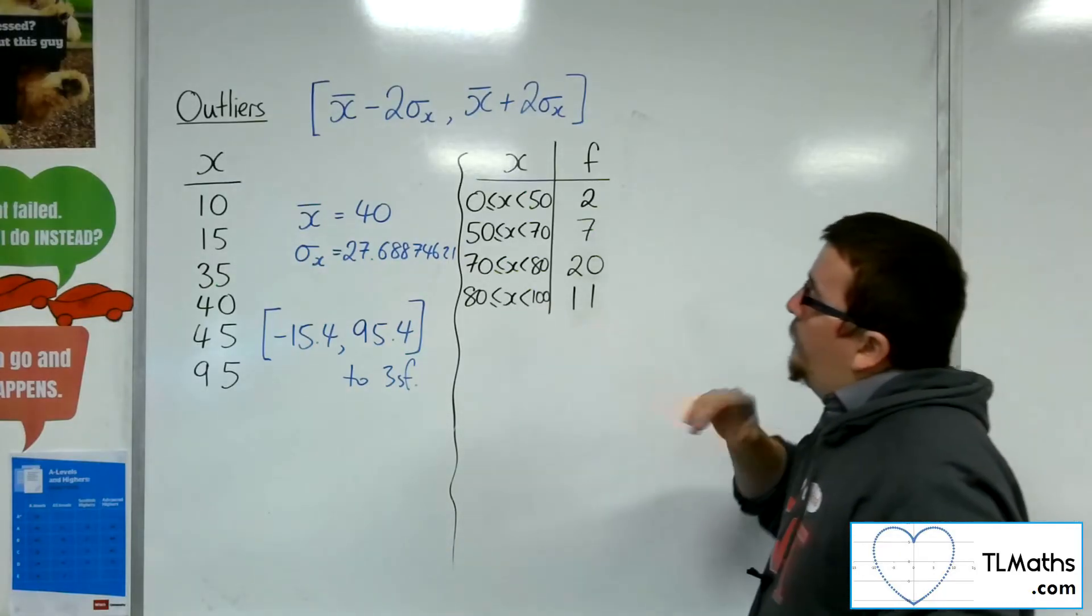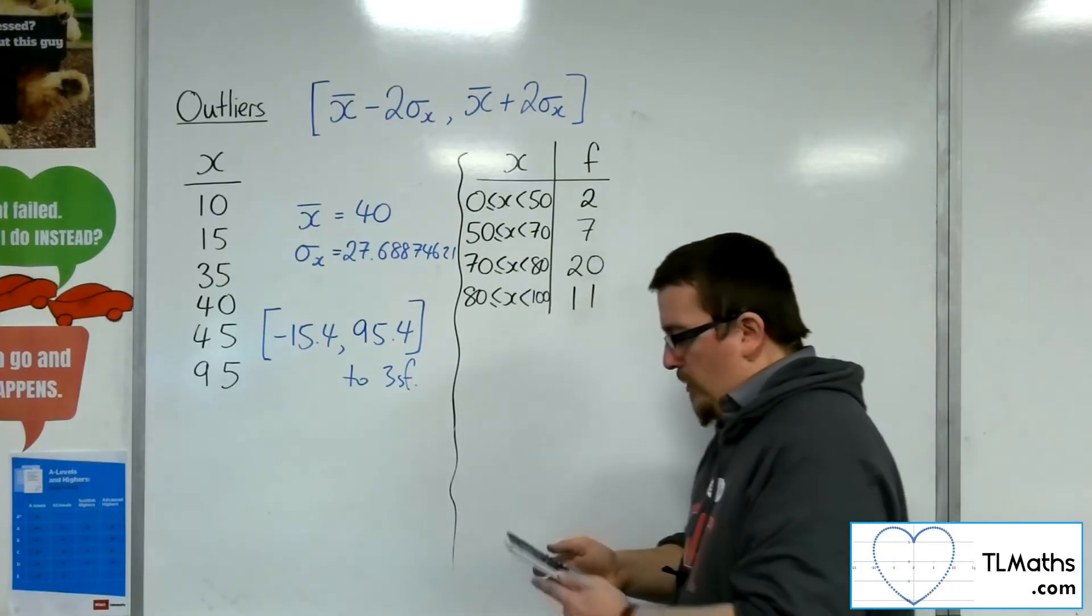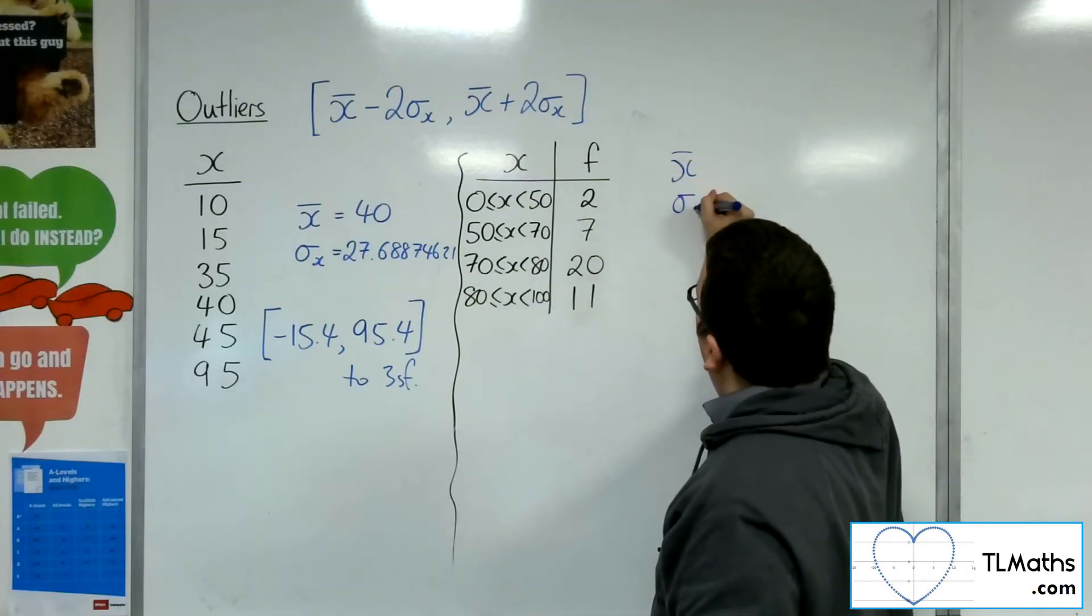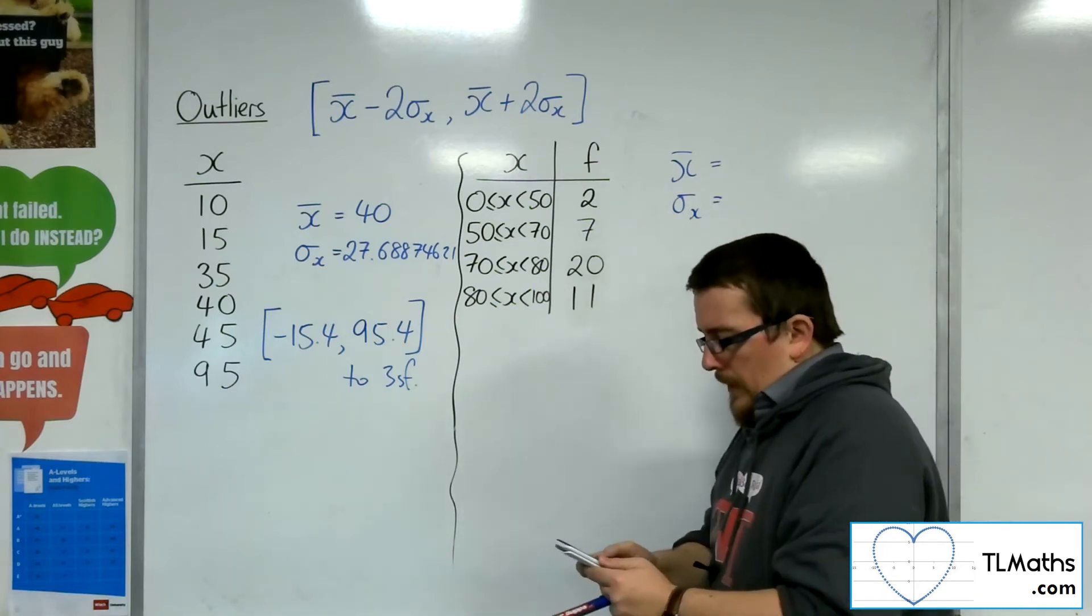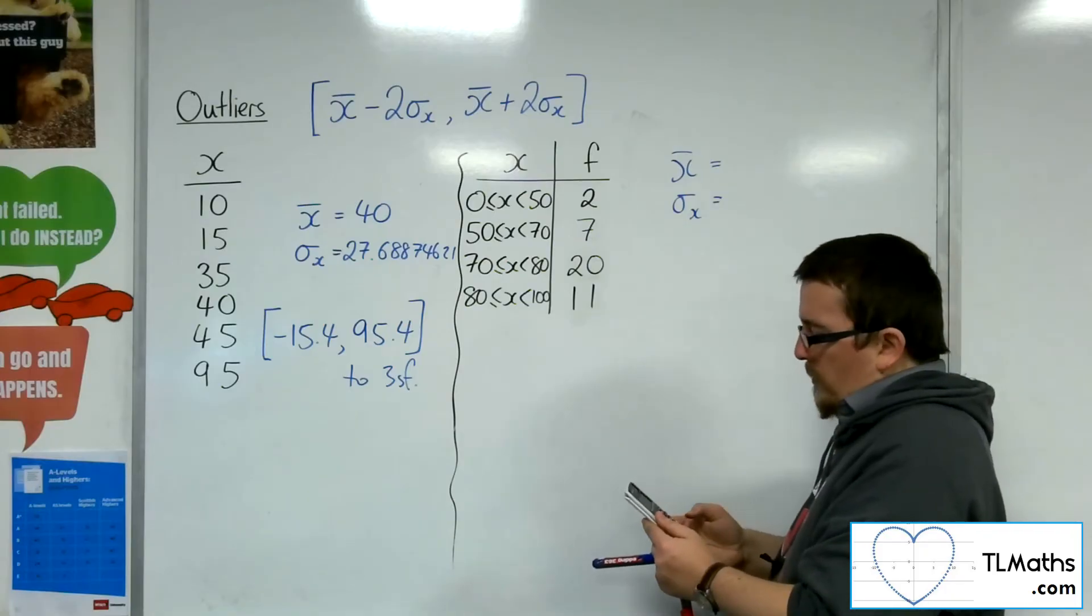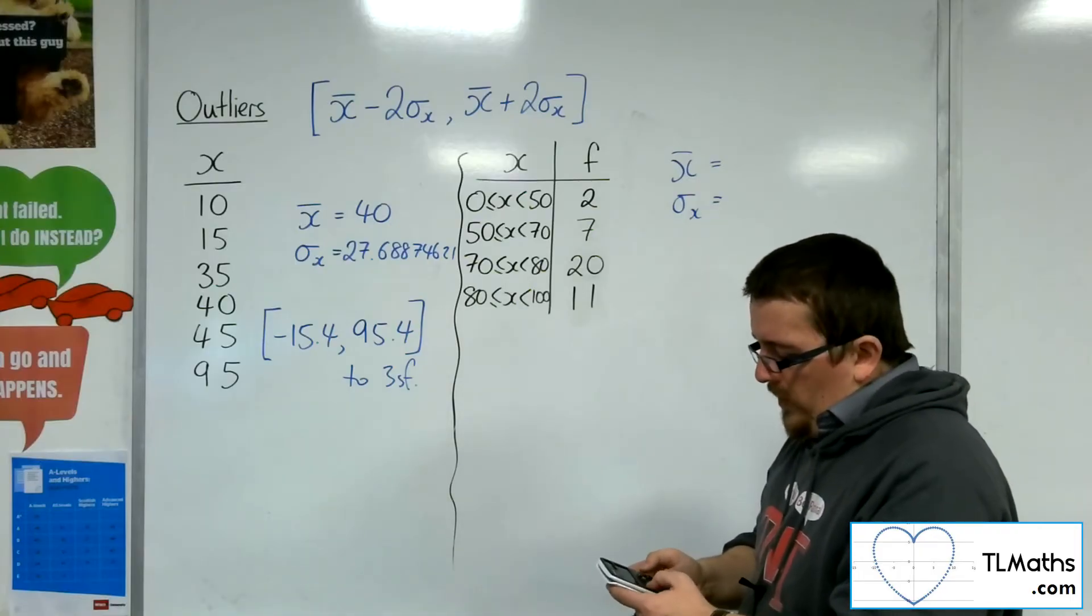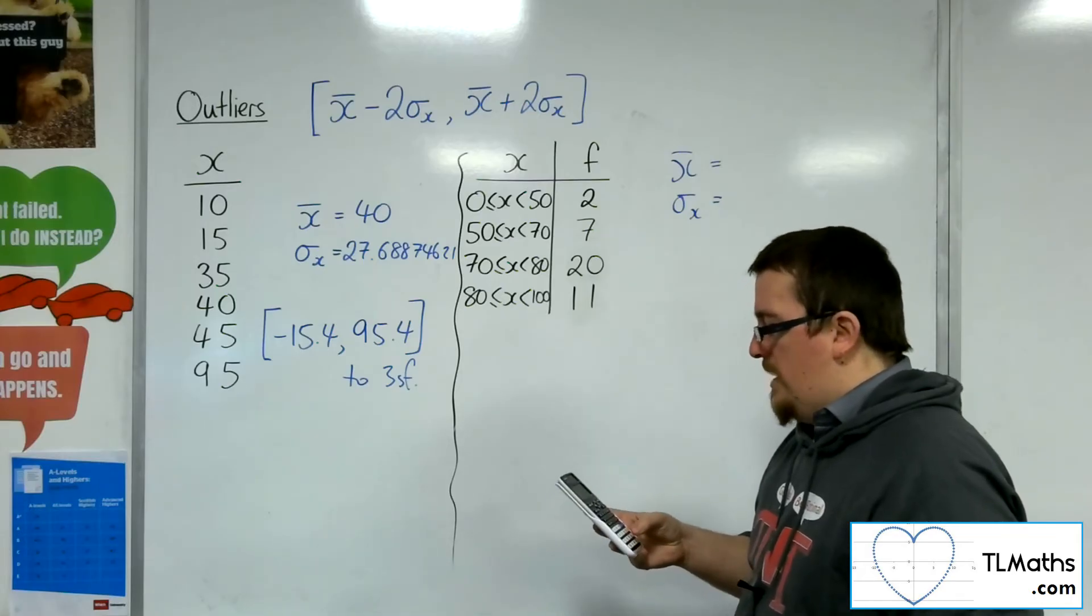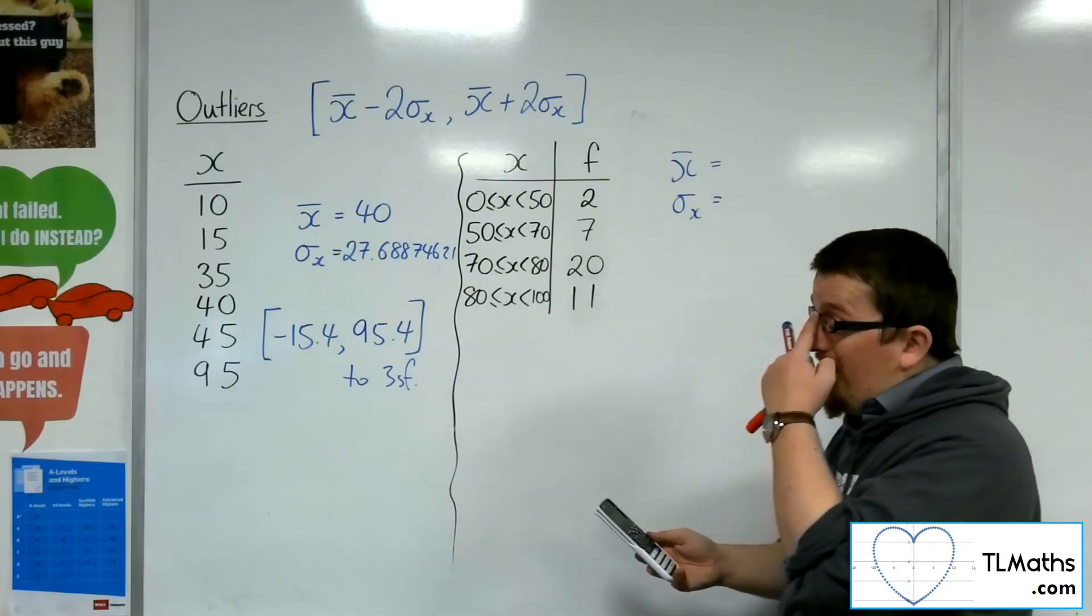Let's have a look at the second example here. So what I want to do is I want to go straight to the calculator and find the mean and standard deviation. So, number six, we want to go to one variable. Make sure you've got your frequency column here. If you don't have your frequency column, then shift menu to go to the setup, scroll down to get to statistics, number three, and then frequency on, number one. The frequency column should now appear.